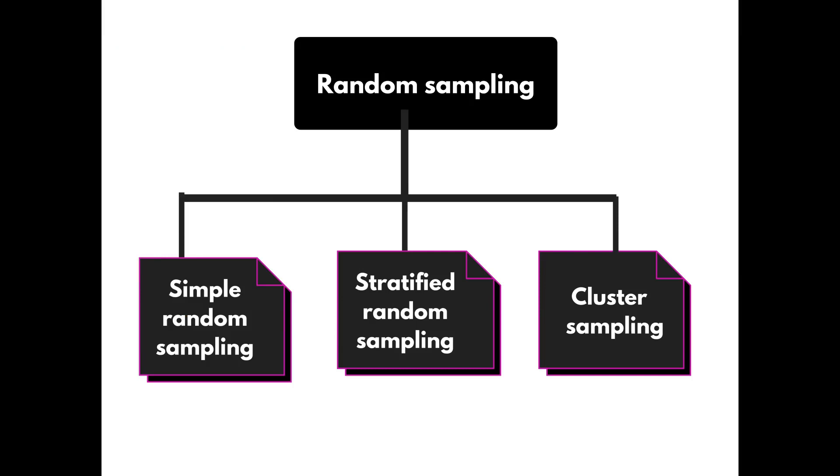Random sampling is divided into simple random sampling, stratified random sampling, and cluster sampling.